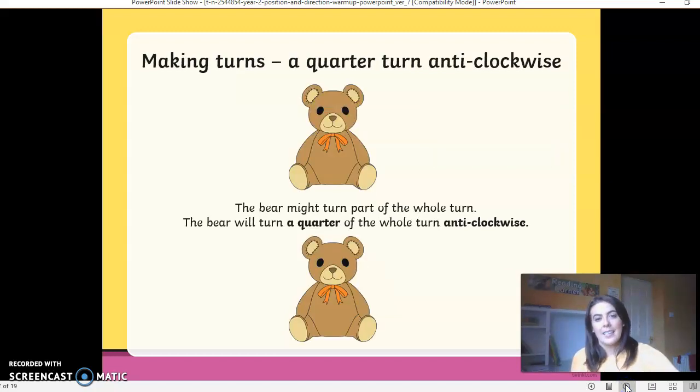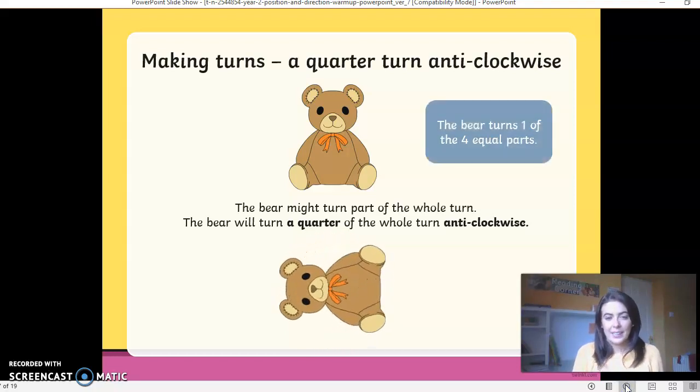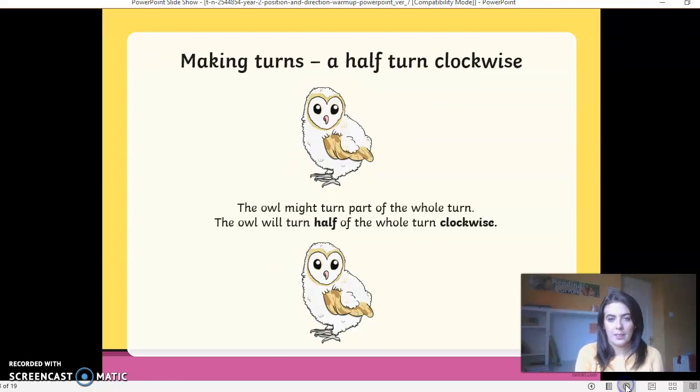Making turns again. So a quarter turn anticlockwise, so we know that the teddy bear is now going to turn anticlockwise. I'll give you a second to decide which side it might turn. So the bear will turn a quarter of the whole turn anticlockwise. Did you get that right? That you knew it was going to go the opposite way? Because remember, anti is opposite. The bear turns one of the four equal parts.